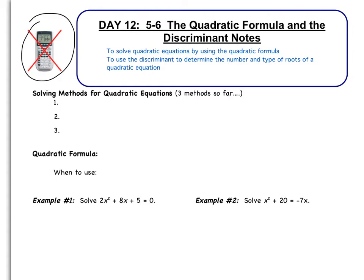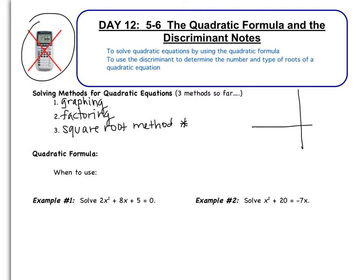So far, we have learned three methods for solving quadratic equations. The first one is by graphing, the second one is by factoring, and then we've also learned the square root method — you may have learned this already or will be learning it in the upcoming few days. Remember that any time we're solving a quadratic, we're looking for the two points where the parabola crosses the x-axis. Today we're learning the fourth method, which is the quadratic formula.